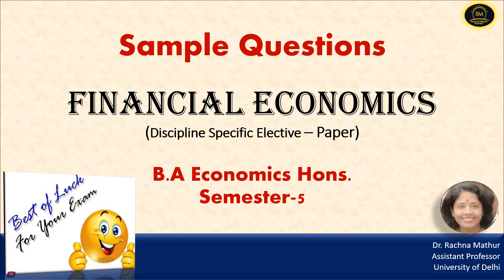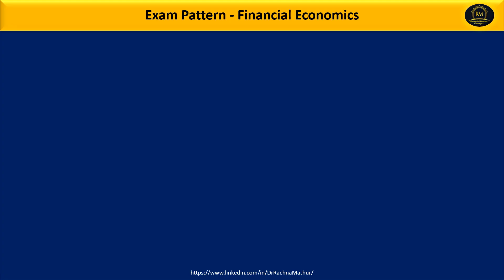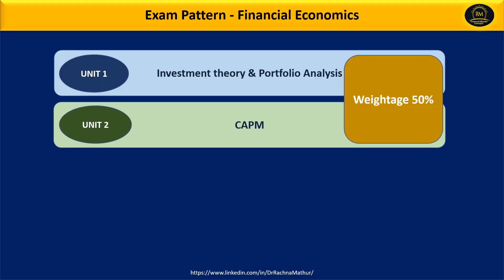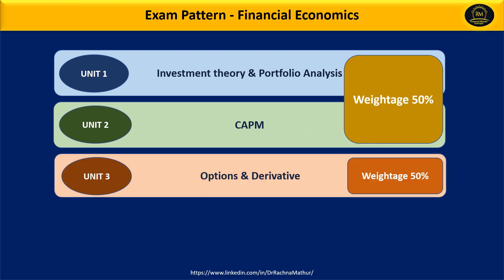All the best to all my dear students. Let's see the syllabus first. The financial economics syllabus is divided into three units. Unit 1 is on investment theory and portfolio analysis, Unit 2 is on capital asset pricing model, and Unit 3 is on options and derivatives. The question pattern will be 50% weightage from Unit 3 and 50% weightage from Unit 1 and Unit 2.